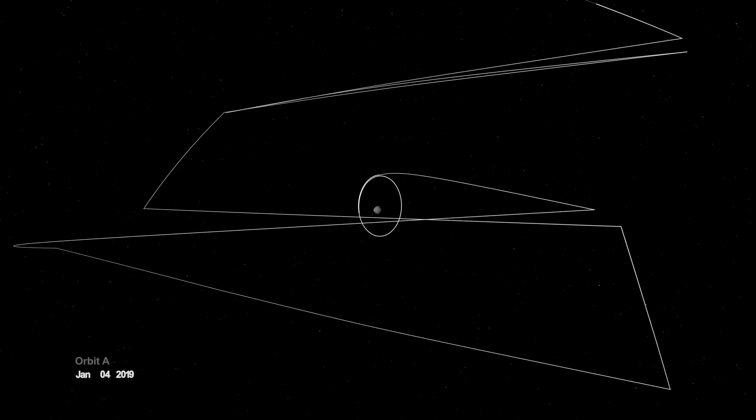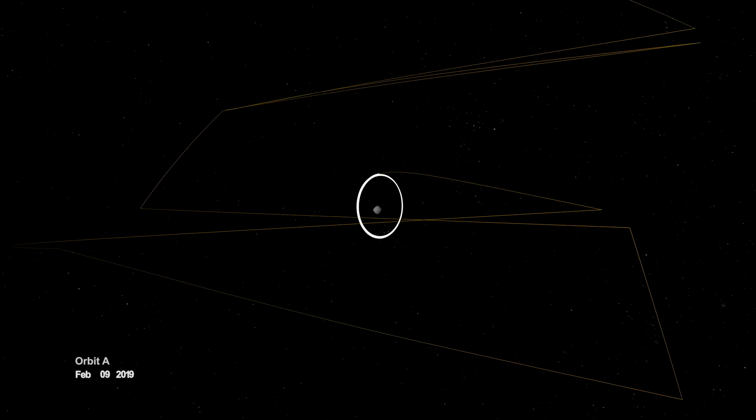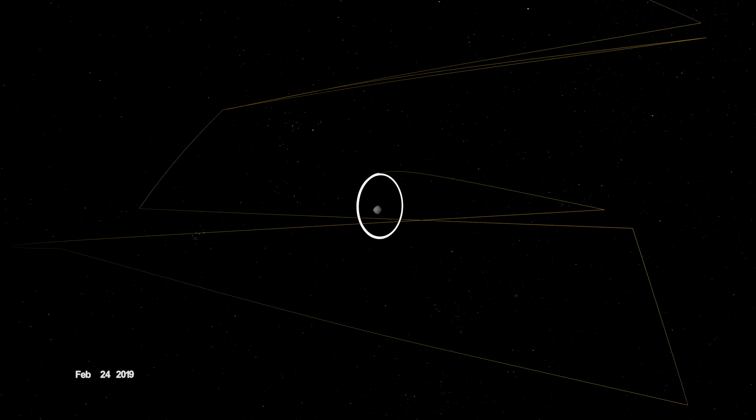On New Year's Eve, OSIRIS-REx was captured into orbit by Bennu's minuscule gravity, making it the smallest world ever to be orbited by a spacecraft.